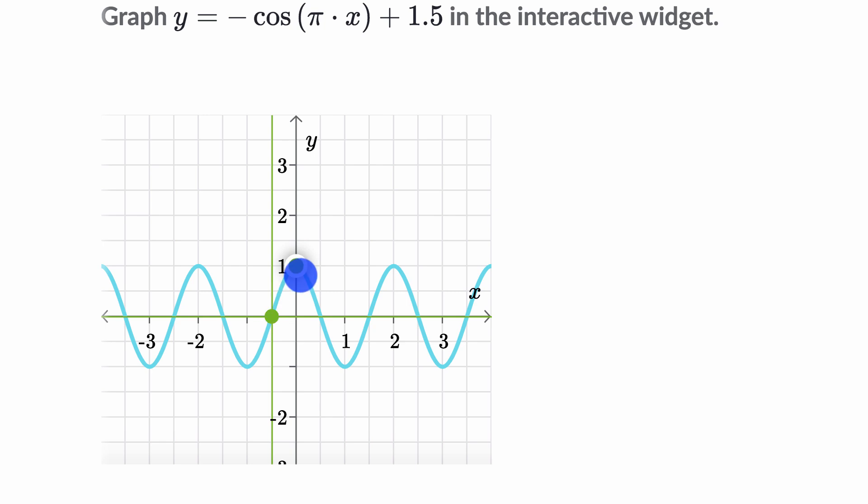And the reason why I worked on this midline point is I liked having this maximum point at one, when x is equal to zero. Because we said cosine of pi times zero should be equal to one. So that's why I'm just manipulating this other point in order to set the period right.